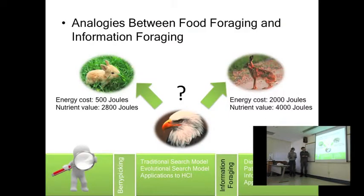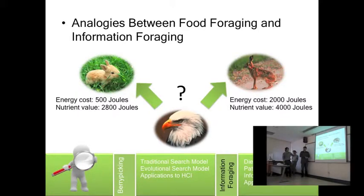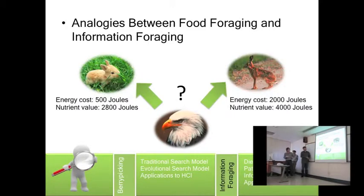Take for example: imagine you are the eagle, and you come across a field full of rabbits and hares. Assuming the energy taken to catch these animals and their nutrition values are always the same, which one would you prefer to catch? It's not difficult to tell that the rabbit is a better choice. Peter and Stuart noticed this similarity between users' information-searching patterns and animal food-foraging strategy, and came up with the theory of Information Foraging.